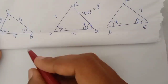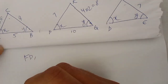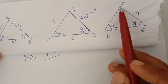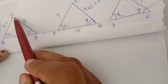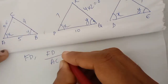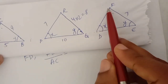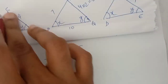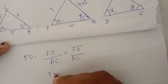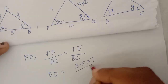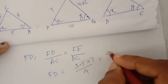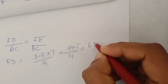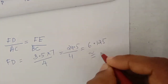Now we are looking for FD. FD by AC is equal to FE by BC. FD is equal to 3.5 into 7 by 4. We calculate: 24.5 by 4 is equal to 6.125. We approximate to 6.13.